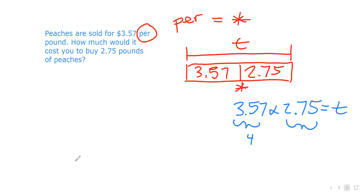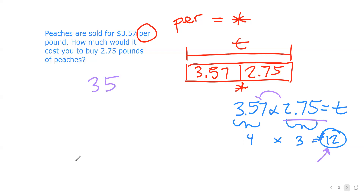I can use estimation: three fifty-seven is about four, and two seventy-five is about three, so it's going to cost about twelve dollars. This is useful in real life — I overestimated both to confirm the max cost is around twelve dollars, and if I have fifteen dollars I can afford it. Now I can't use repeated addition here because I don't know how to do two and seventy-five hundredths of three fifty-seven. So I'll multiply these as if they were whole numbers and then use my estimate to place the decimal.